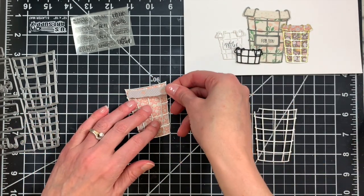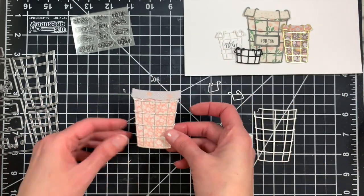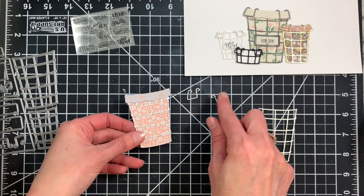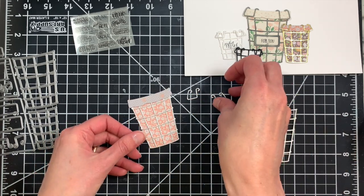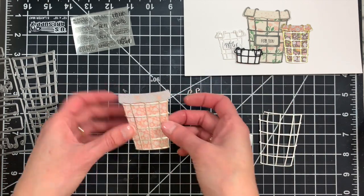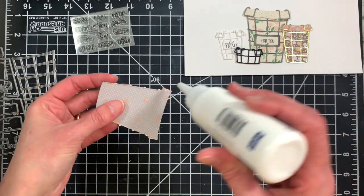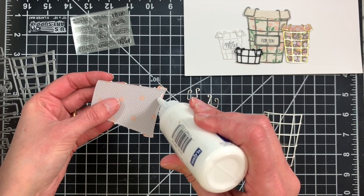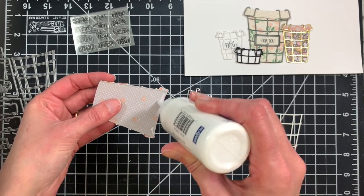Now there are two different size handles. The larger set goes with the larger basket. The smaller handles go with the smaller two sizes of baskets. The easiest way I found to adhere those handles is to actually turn your basket over to the back side and add just a little bit of liquid adhesive on each side of the top edge.